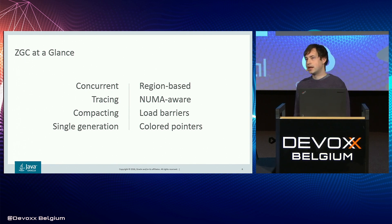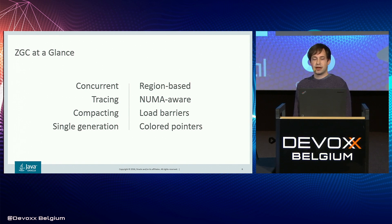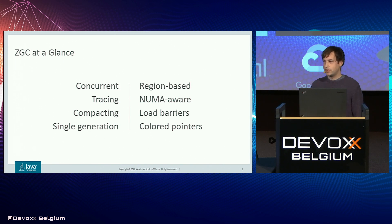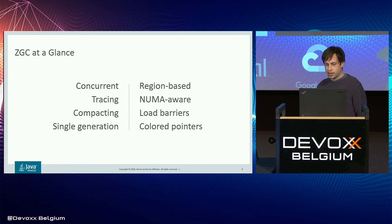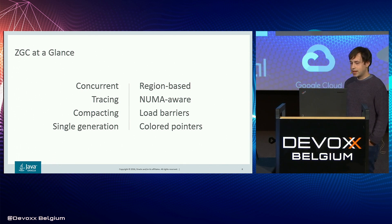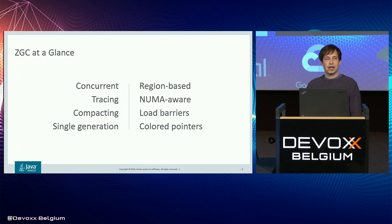ZGC is region-based. We reserve a four-terabyte large virtual address space and allocate at a granularity of two-megabyte regions inside that space. It is NUMA-aware, so when you allocate objects from a thread, we try to give you memory local to that node so you can scale your workloads to larger machines without overhead. To make all this concurrent magic happen, we rely heavily on load barriers and colored pointers, which we'll look at in more detail in a moment.